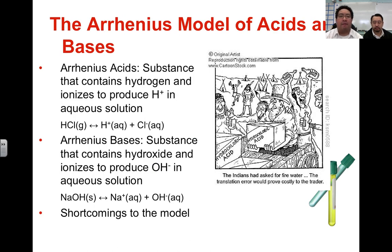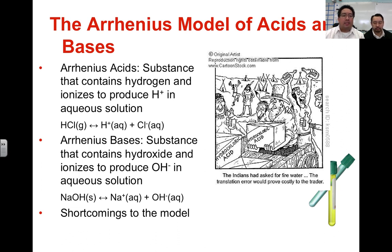There are different ways to identify something as an acid or a base. The first definitions were developed by Arrhenius. Arrhenius acids are substances that contain hydrogen and ionize to produce hydrogen ions directly by dissolving in water. Arrhenius bases similarly directly produce hydroxide ions when dissolved in water. Notice that Arrhenius acids and bases directly have either hydrogen or hydroxide ions in their formulas. However, some things can act as an acid or a base without necessarily having hydrogen or hydroxide ions, so a different definition was necessary.